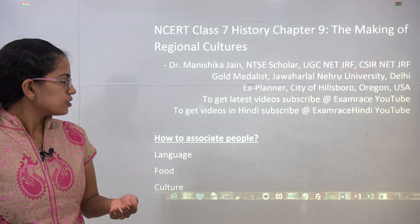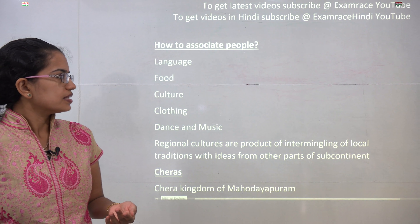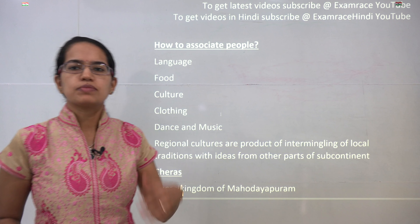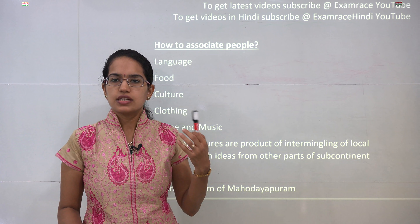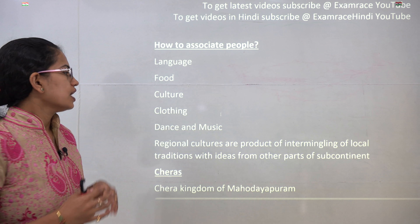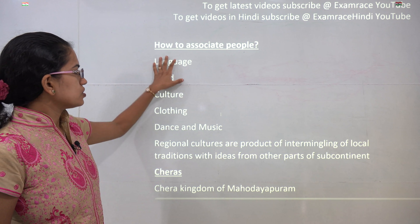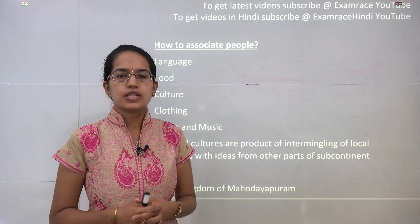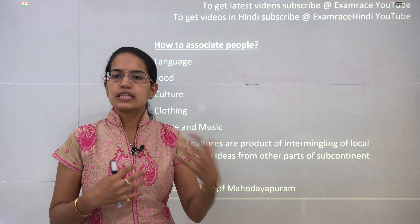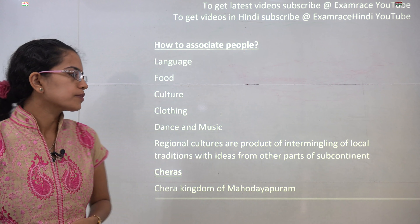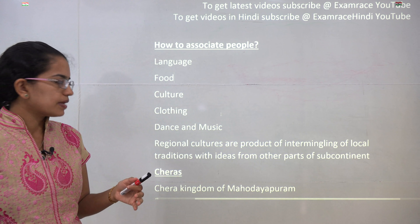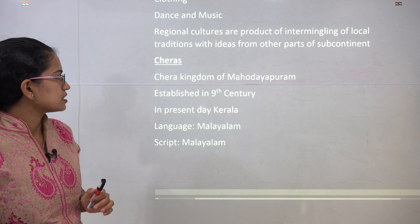Whenever we try to associate people, there are certain basic factors we try to include. We associate them based on language, religion, the region they live in, the food, the customs, the dance, the music in the region and so on and so forth. Based on these parameters, you try to associate people. For example, people speaking Oriya language would be from Odisha, people speaking Tamil language would be from Tamil Nadu. These regional cultures are a result of the intermingling of various traditions that exist within the society.